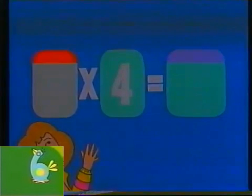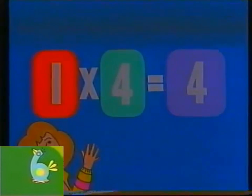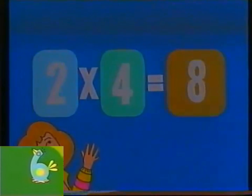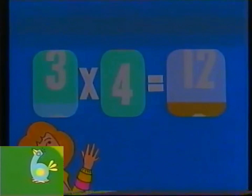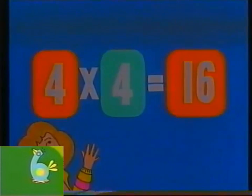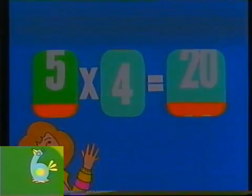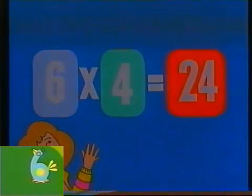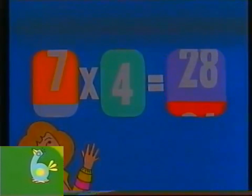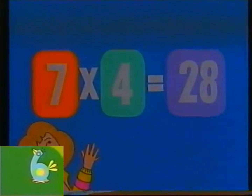One times four is four. Two times four is eight. Three times four is twelve. Four times four is sixteen. Five times four is twenty. Six times four is twenty-four. Seven times four is twenty-eight.